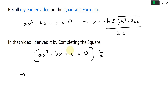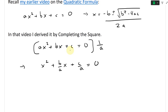So what we get after dividing by a is x² + (b/a)x + c/a = 0. Now the next step is to complete the square. I'll write here (x + d)², that is the completing the square part.